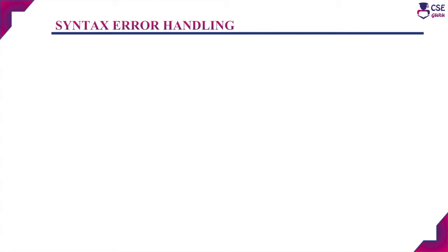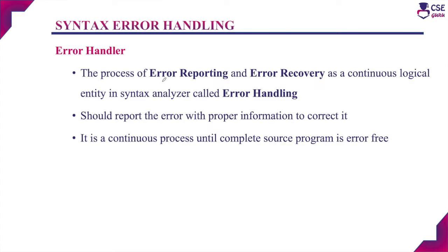The two main functions of the parser are: first, it checks whether the token stream is according to the syntactical structure, and if so, it constructs the parse tree. Second, if the token stream is not according to the syntactical structure, there may be errors present in the source code. The parser detects those syntax errors and reports them to the user.